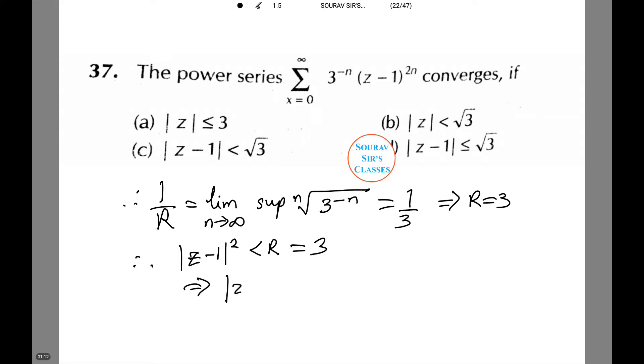Thus, z minus 1 is less than root 3. Thus, option C is the correct option. Let's see the next one.